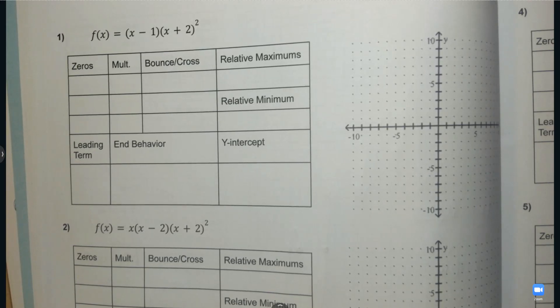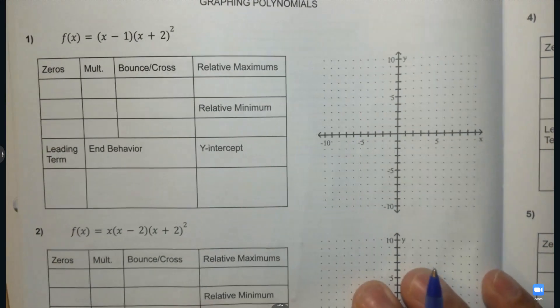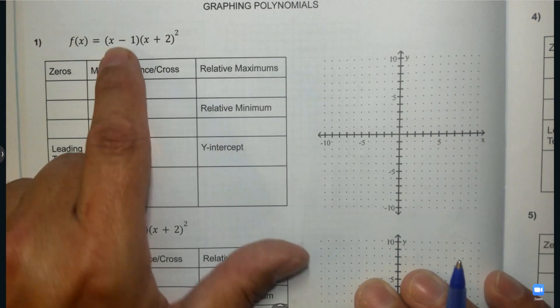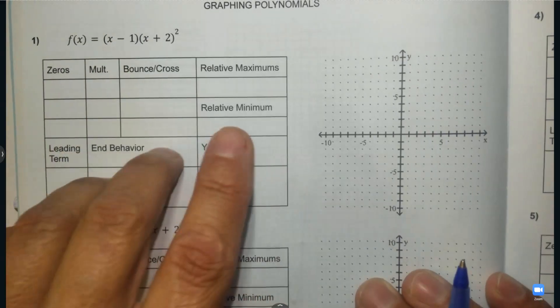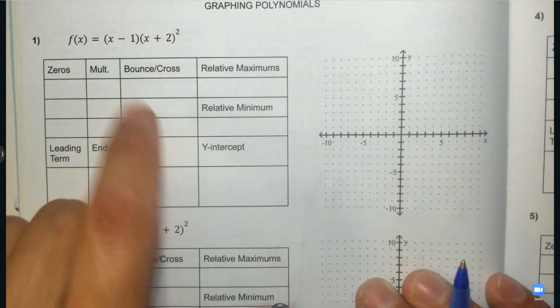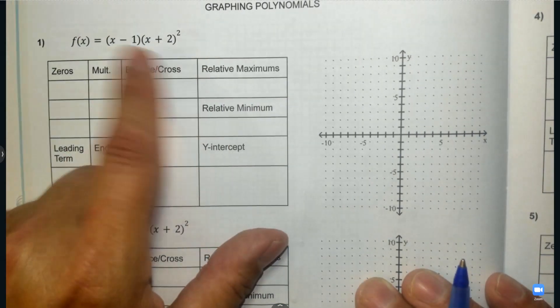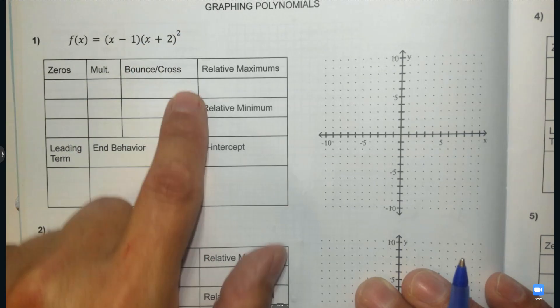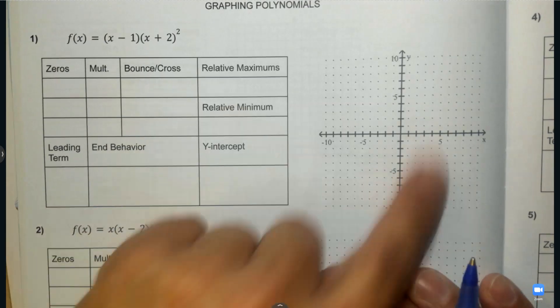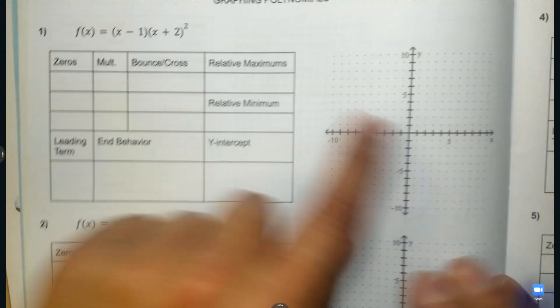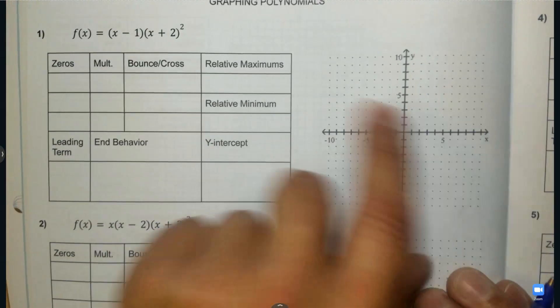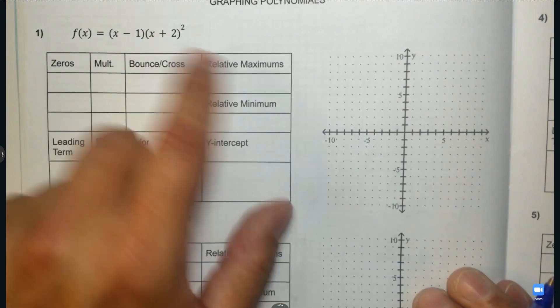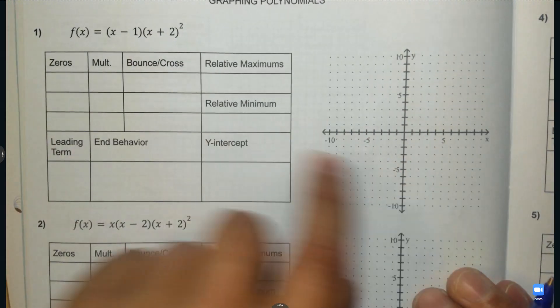We are graphing polynomials that are already factored. We're going to graph perhaps when they're not factored, but this is already factored. And we're going to take this and graph what this looks like.